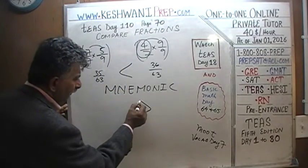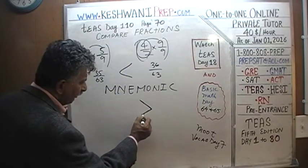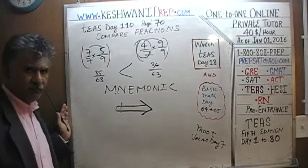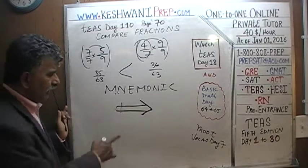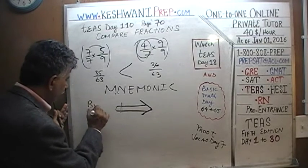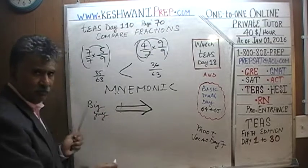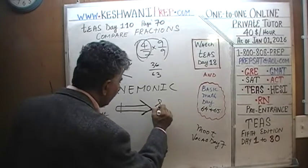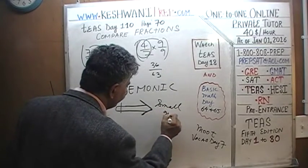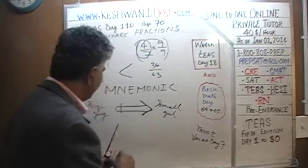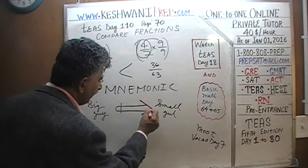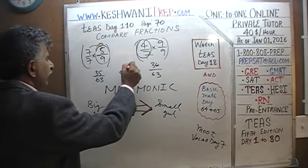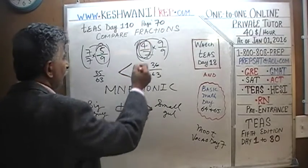When you see the greater-than or less-than sign, think of it as a dagger — as a knife. Who is going to point the dagger at whom? The big guy is going to point it, because the big guy tends to be the bully. The big guy points to the small guy. We just established that five-ninths is smaller than four-sevenths.